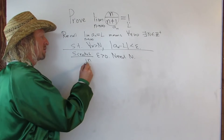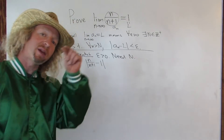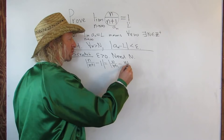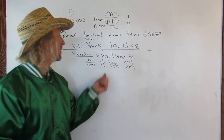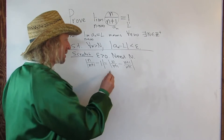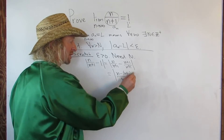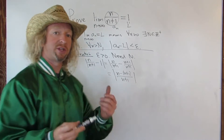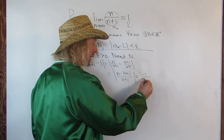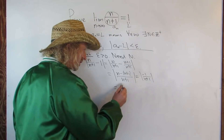So let's write down this condition. a sub n in this problem is n over n plus 1, and l is 1. So it'll be n over n plus 1 minus 1, which is n over n plus 1 minus n plus 1 over n plus 1. This equals negative 1 over n plus 1. Taking the absolute value eats the negative sign, so we get 1 over n plus 1.